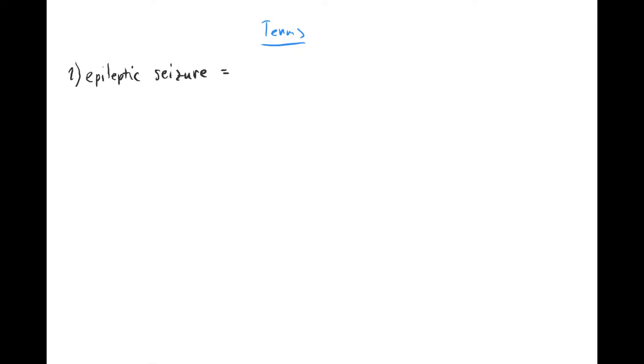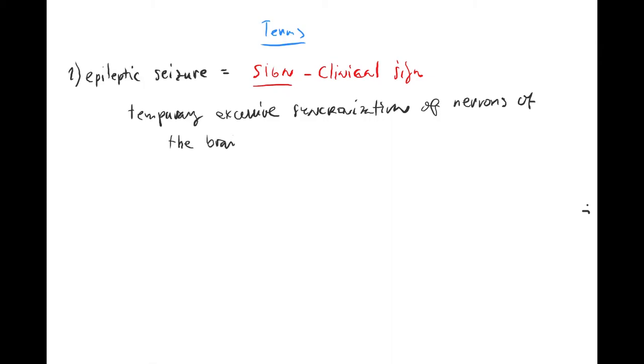Remember, seizure is just the manifestation. So, it's a sign. A seizure is a clinical sign. That's what you see. And it's a sign of a temporarily or temporary excessive synchronization of neurons of the brain. So, it's the clinical sign which correlates with this temporary excessive synchronization.